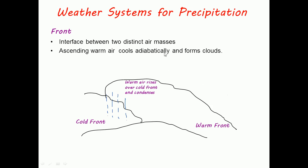These are different weather systems for precipitation to form. First is front. In frontal precipitation, there is interface between two distinct air masses. As you can see from the figure, here is cold front and warm front.